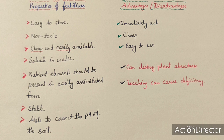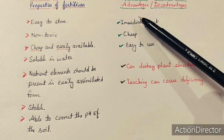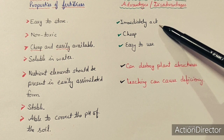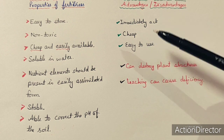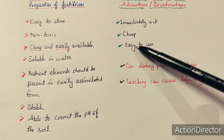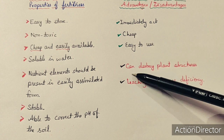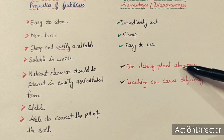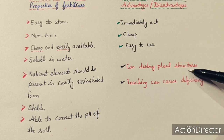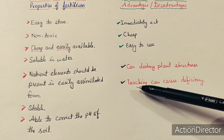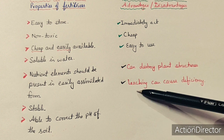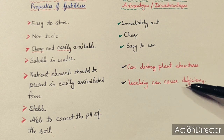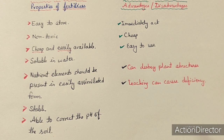Advantages of fertilizers: they act immediately, are cheap, and are easy to use. Disadvantages: if present in excess, they can destroy plant structure. Also, if they are highly soluble, leaching can occur — nutrients dissolve and are lost from the soil, causing deficiency.